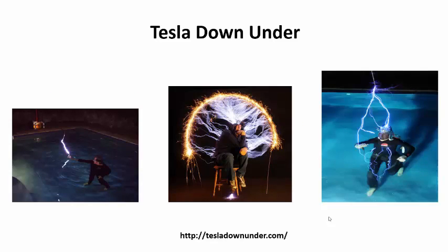This property has been used by a man who goes by the name of Tesla Down Under. He's created a website where he uses a Tesla coil to create thousands of volts. He exposes himself to thousands, even millions of volts, and protects himself using objects of different resistivity. If you'd like to find out more about how he does this, check out the website, tesladownunder.com. There's some pretty cool videos and some pretty cool images of what he's been able to create.